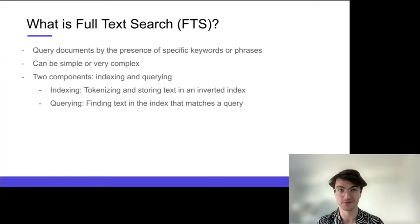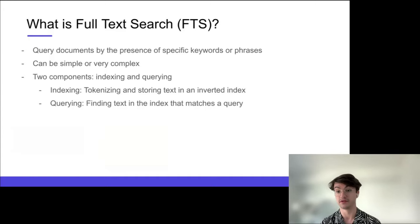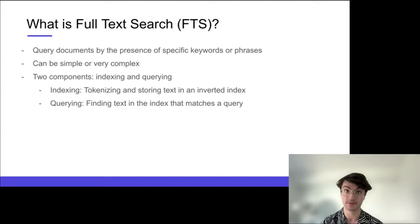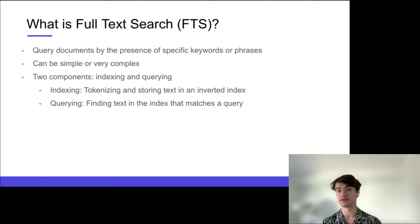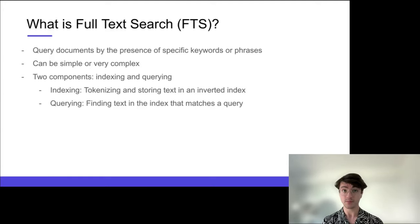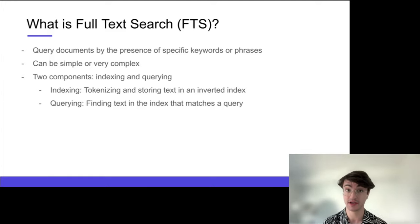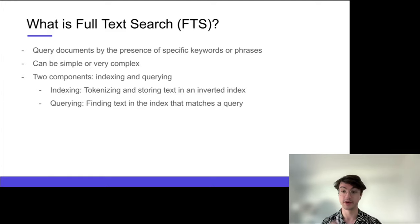Full-text search is essentially the process of keyword-based retrieval for documents within your database. It can be very simple or very complex — pretty much every database nowadays supports some version. On the simple layer you retrieve all documents matching a specific keyword like 'cheese,' but you can also rank search results in various ways, search through text in multiple languages, or do analytics on those results. It's broken down into two steps: the indexing step — we use a library called Tantivy to pre-process text to make it efficiently searchable — and the querying layer.